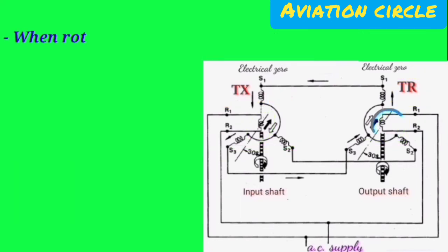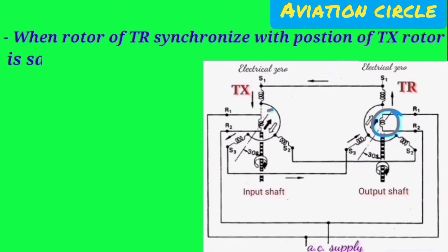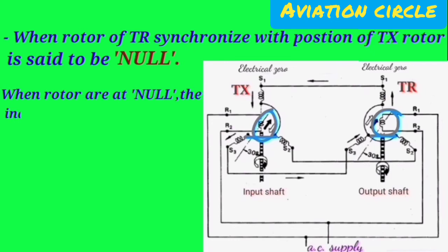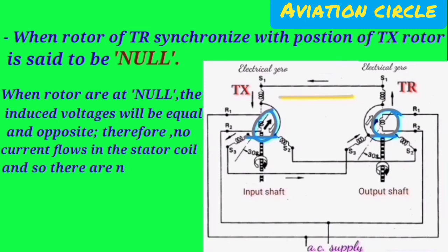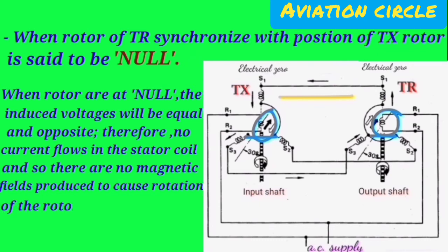When the rotor of TR is synchronized with the position of the TX rotor, it is said to be at null. When the rotors are at the null position, the induced voltages will be equal and opposite. Therefore, no current flows in the stator coil and so there is no magnetic field produced to cause rotation of the rotor of TR.